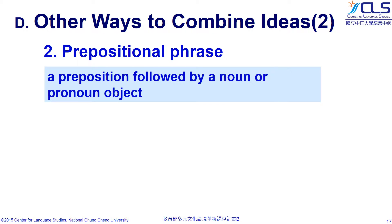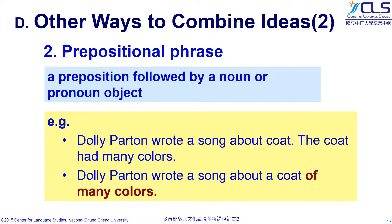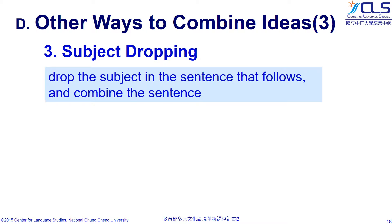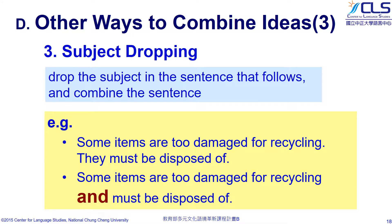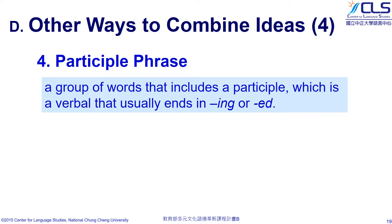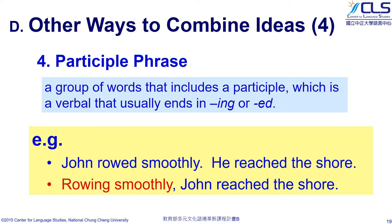Second, use a prepositional phrase to modify the noun in front of it. Number three: subject dropping. When the subjects in each part of the sentence are the same, we can delete the later one. Number four: participle phrase. This is using a group of words that includes a participle, such as words ending with -ing or -ed. Here we can see the example: 'John rolled smoothly and reached the shore.' We first write a participle phrase, 'rolling smoothly,' and then combine the two sentences describing John's behavior.